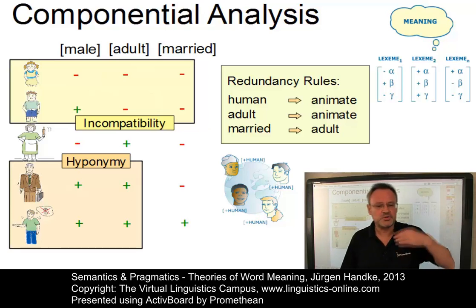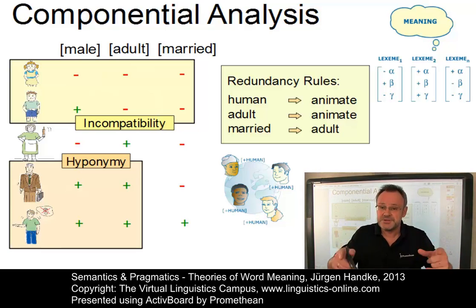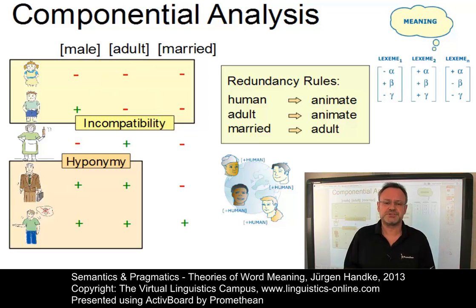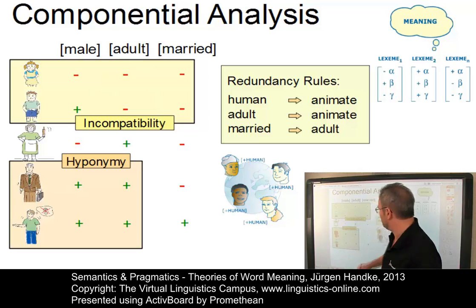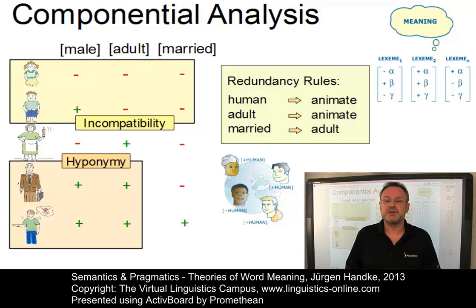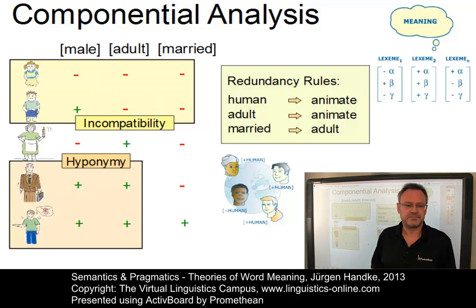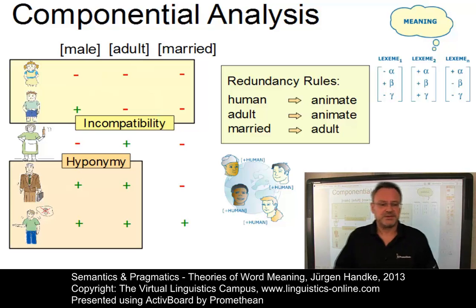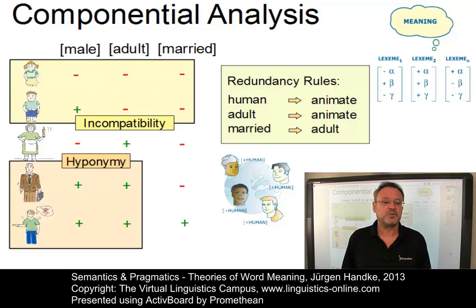Incompatibility holds between lexical items in a set if they share a set of components but differ from each other by one or more contrasting features. Thus, 'boy' and 'girl' are incompatible — they differ in one feature, that is the feature 'male'. These basic ideas of componential analysis have been extended in the work of various linguists and will be discussed in a separate e-lecture.